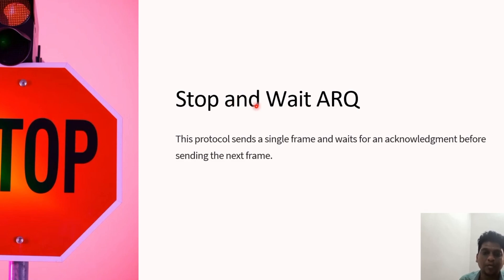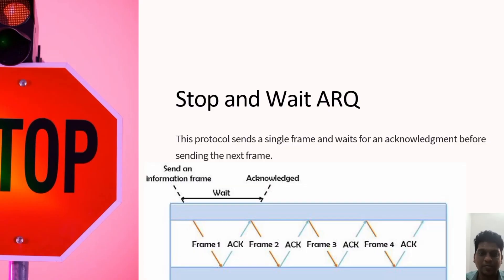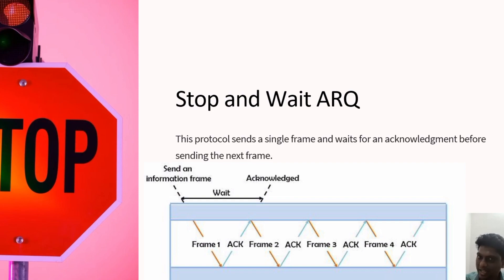Stop-and-Wait protocol sends a single frame and waits for the acknowledgement before sending the next frame. Among all protocols it is the simplest. The window size is always one. The sender transmits one packet at a time and waits for an acknowledgement from the receiver before sending the next packet. If the acknowledgement is not received within a certain time, the sender retransmits the packet. It is mainly suitable for channels with low error rates, low data rates, and short distance communication.